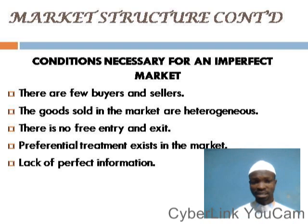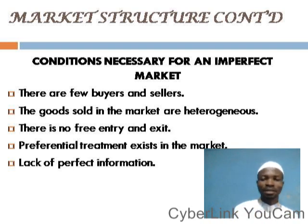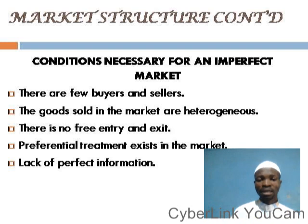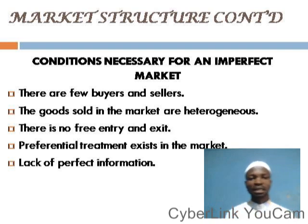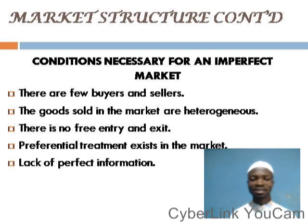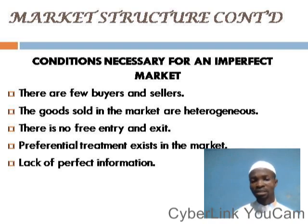Another condition is that in an imperfect market, the goods sold are heterogeneous. This differentiates an imperfect market from a perfect market — in a perfect market we have homogeneous products, but in an imperfect market they deal in heterogeneous products where you can easily identify areas of differences. Another condition is that there is no free entry and exit, as against what we have in a perfect market. The implication is that new entrants cannot just come into the market because there are barriers that discourage or prevent new operators from joining.